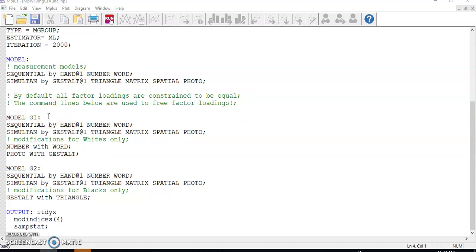Next, I repeat the same model structure for individual groups. This is why you see two more model blocks: Model G1 is for group 1 and Model G2 is for group 2. Additionally, within each of the group blocks, I need to add the modifications that were made in step 1 to that group. For example, for white children, we added correlations-covariances between two pairs of indicators: number with word, photo with gestalt. They need to be included in model G1. For group 2, the black group, one modification was made that added correlation between gestalt and triangle, and it should be included for model 2. Always make sure all details are taken care of before you save and run.